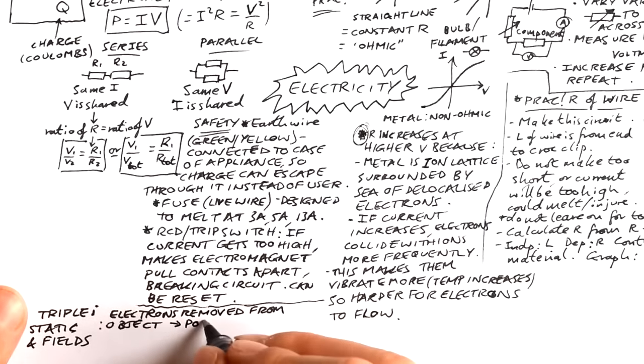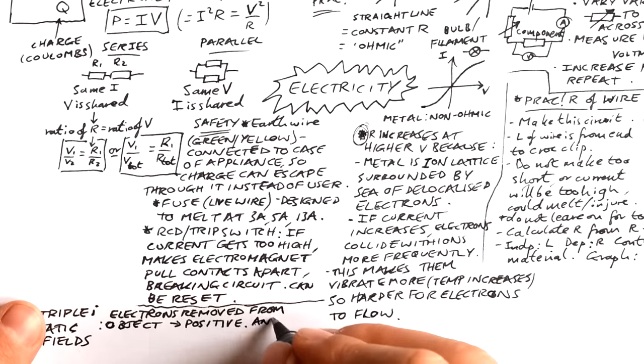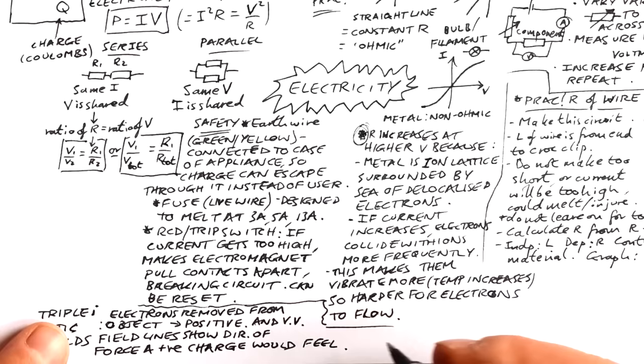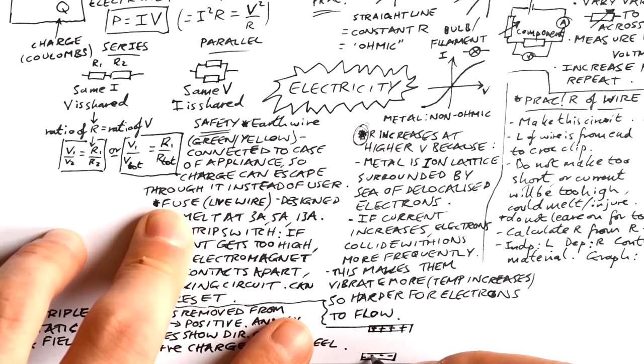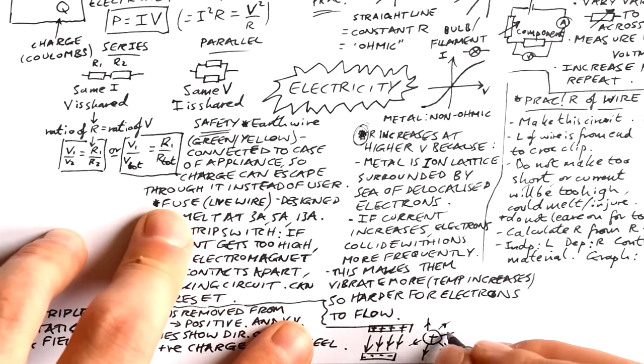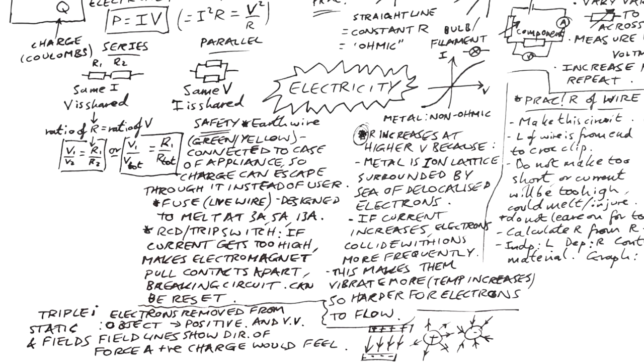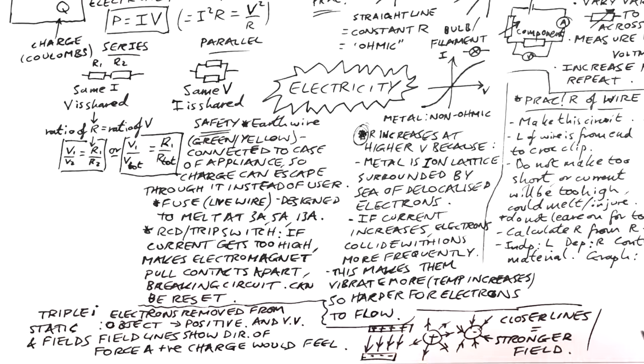This is usually one for just triple people, static electricity and fields. If electrons are removed from an object, then it becomes positive and obviously vice versa. We can draw electric field lines to show the direction of the force a positive charge would feel. So here I have two plates that are charged positively and negatively. If there was a positive charge between them, of course it would be repelled from the positive plate and be attracted towards the negative plate. So therefore the field lines go down. That's what we call a uniform field because we have nice straight lines. But if we have something like a proton, we can draw field lines around it radially because we know a positive charge coming close to a proton would be repelled. And then obviously they'd be going towards something like an electron. And for a field that isn't uniform, if we have lines closer together, that means the field is stronger at that point.